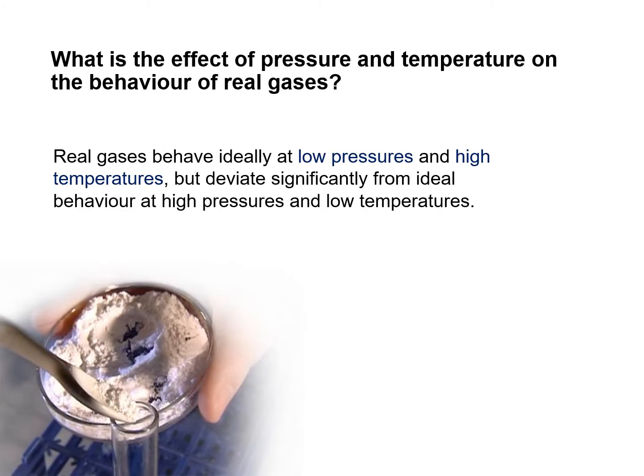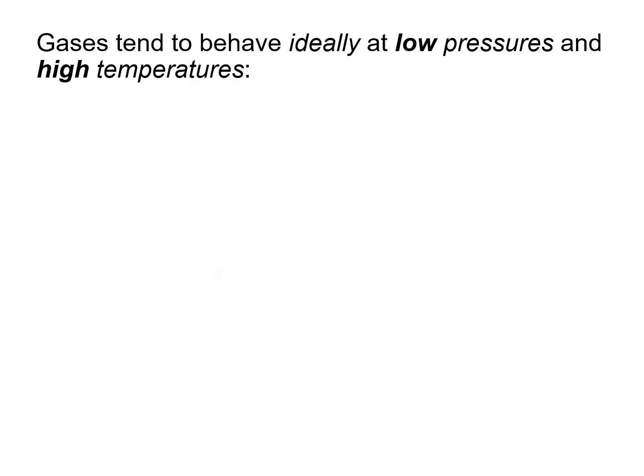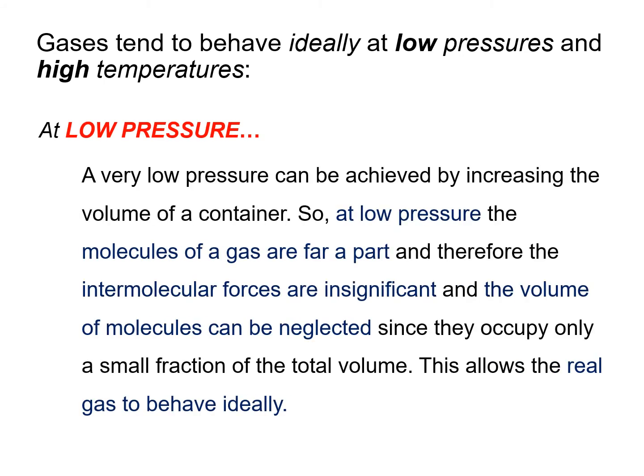What are the effects of pressure and temperature on the behaviour of real gases? Real gases will behave ideally at low pressure and high temperature, but as the pressure becomes higher and the temperature becomes lower, they deviate significantly from ideal behaviour. Why does real gas behave ideally at low pressure? When we increase the volume of a container, gas molecules are far apart from each other, making intermolecular forces and volume insignificant, allowing the real gas to behave ideally.